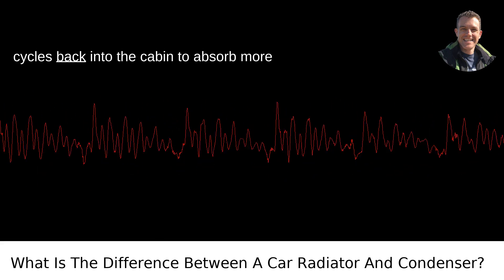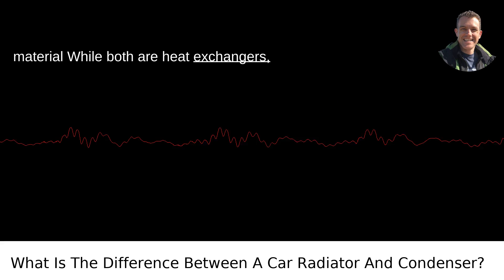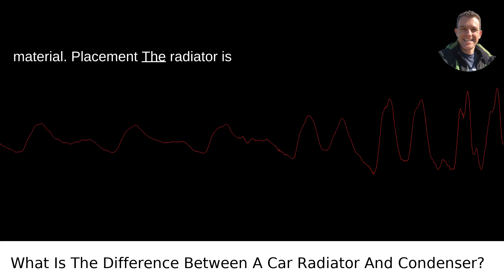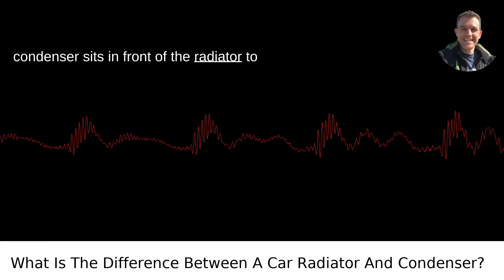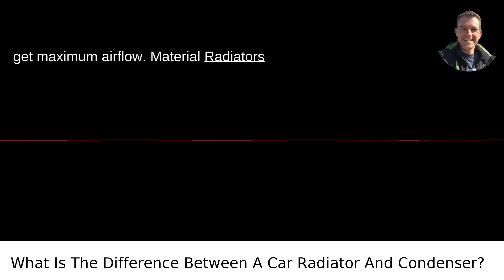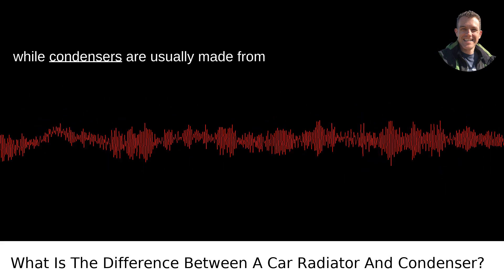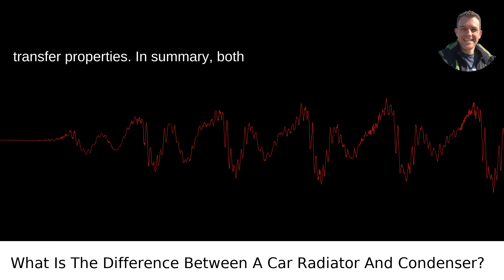Differences in placement and material. While both are heat exchangers, they typically differ in location and material. Placement: The radiator is usually closer to the engine, while the condenser sits in front of the radiator to get maximum airflow. Material: Radiators often use a mix of aluminum and plastic, while condensers are usually made from aluminum due to its efficient heat transfer properties.